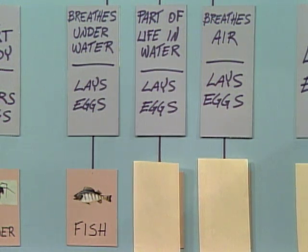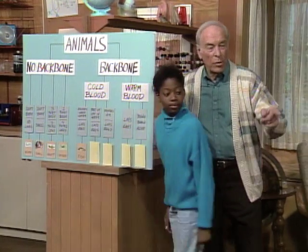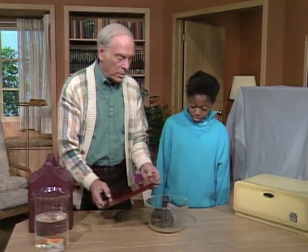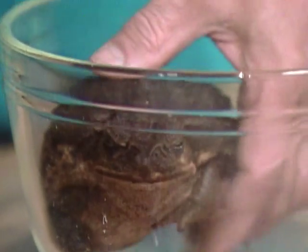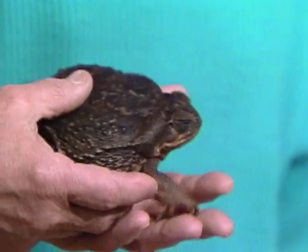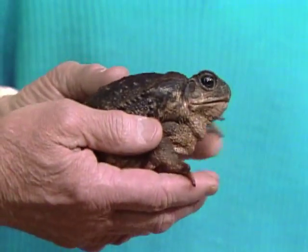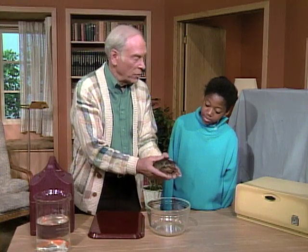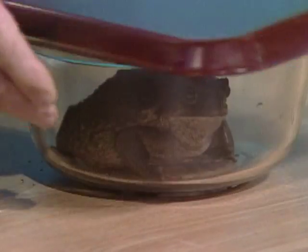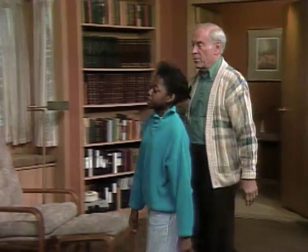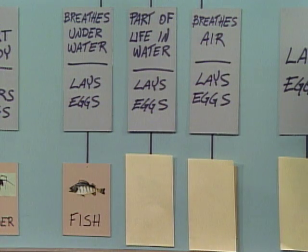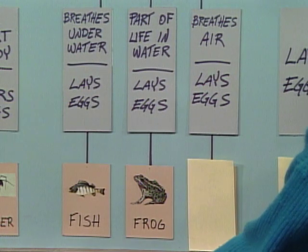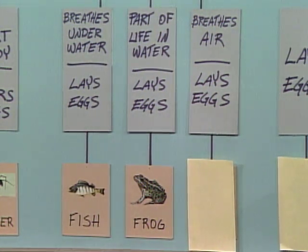Next: backbone, cold blood, part of life in water, and lays eggs. You'll find that animal under the tray over here. What could it be? A frog. What classification of animal is a frog? An amphibian. Well, you kids use the word gross all the time, but gross means big — and it's a big toad. A toad, yes, sort of a cousin to the frog. So go see if you were correct: backbone, cold blood, part of life in water, and lays eggs — it says frog. You are correct, and we're both correct if it had said amphibian, because they're both amphibians.